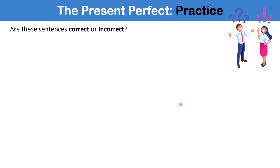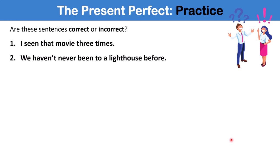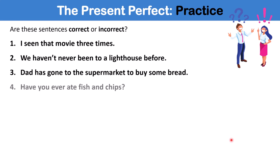So now it's time for our quiz. There are eight sentences in total, and you must identify and correct any mistakes in these sentences. Let's begin. Number one, I've seen that movie three times. Number two, we haven't never been to a lighthouse before. Number three, Dad has gone to the supermarket to buy some bread. Number four, have you ever ate fish and chips?